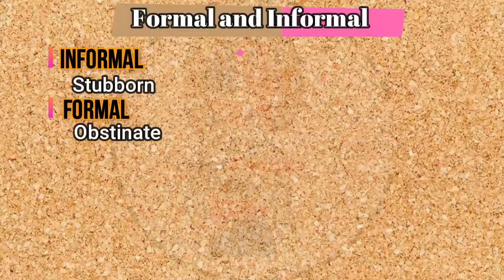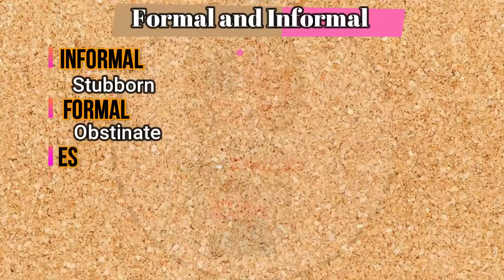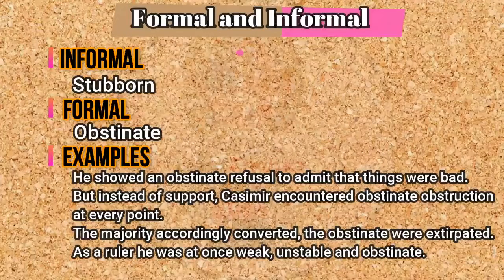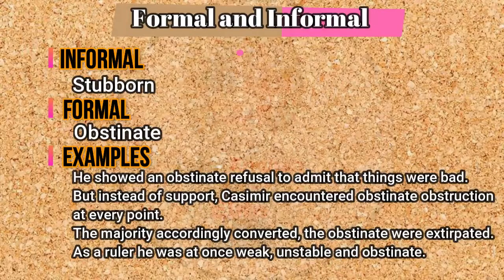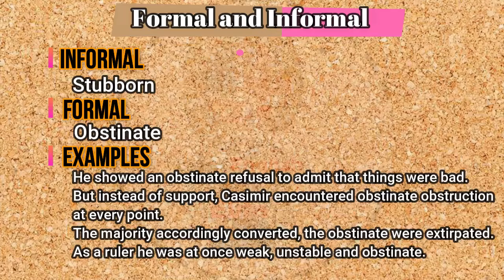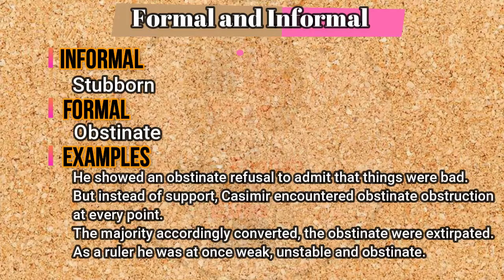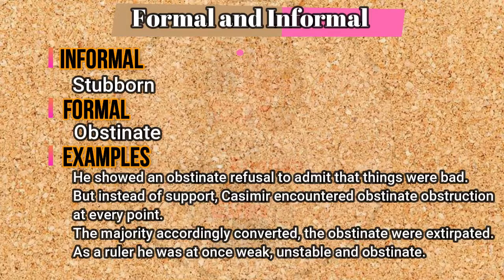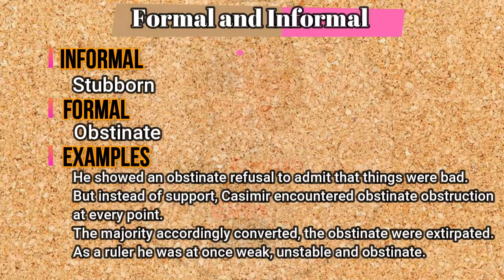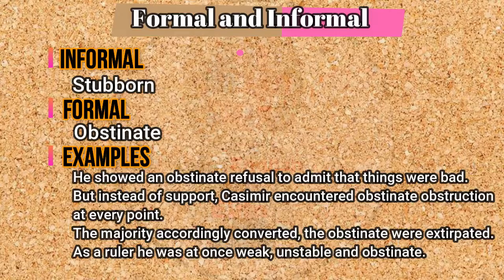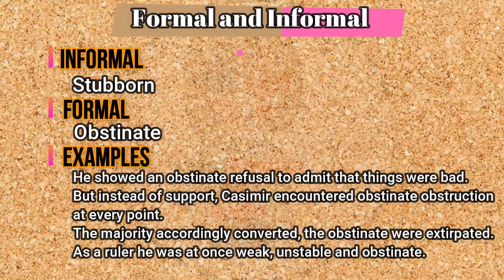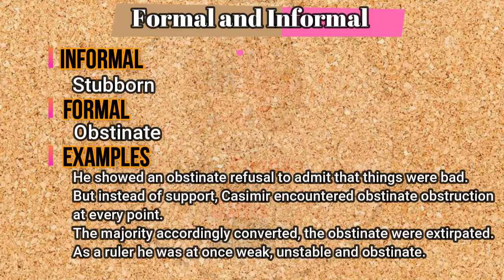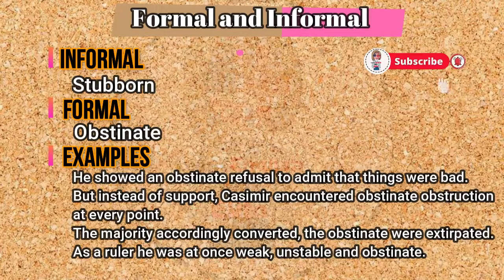Now let me show the example of 'obstinate' in sentences. He showed an obstinate refusal to admit that things were bad. But instead of support, Casima encountered obstinate obstruction at every point. The majority accordingly converted; the obstinate were extirpated. As a ruler, he was at once weak, unstable, and obstinate.